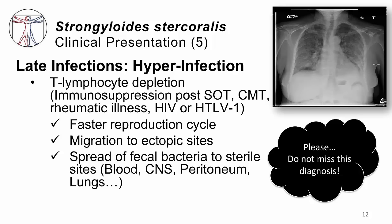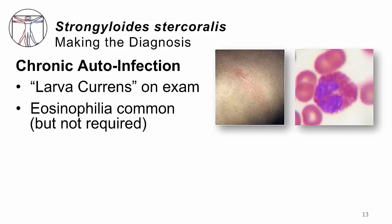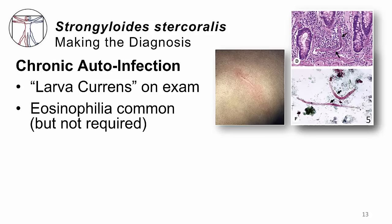How do we make a diagnosis? In patients with chronic auto-infection, ask them about a rash. Do they have larva currans on exam? Have them drop their drawers — look between their buttocks. If they have an itchy rash there or on the anterior abdominal wall, that's larva currans. These patients will usually have a blood test positive for high levels of eosinophils — that's eosinophilia. It's common, though not required, but if present, it helps confirm your suspicion. Sometimes these patients will have diarrhea, go to colonoscopy, and have a GI biopsy — sometimes the tissue will give you the answer, showing microscopic worms in the bowel wall.